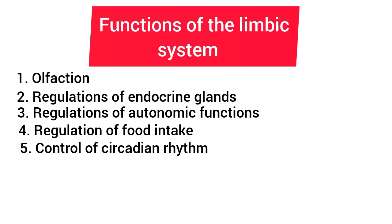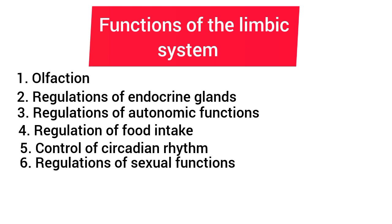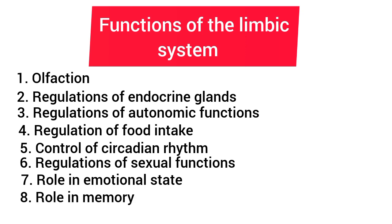5. Control of circadian rhythm — the hypothalamus plays an important role in the circadian fluctuation of various physiological activities. 6. Regulation of sexual functions — the hypothalamus is responsible for maintaining sexual functions in both humans and animals. 7. Role in emotional state — the emotional state of human beings is maintained by the hippocampus along with the hypothalamus. 8. Role in memory — the hippocampus and Papez circuit play an important role in memory. 9. Role in motivation — the reward and punishment centers present in the hypothalamus and other limbic structures are responsible for motivation and the behavior pattern of human beings.